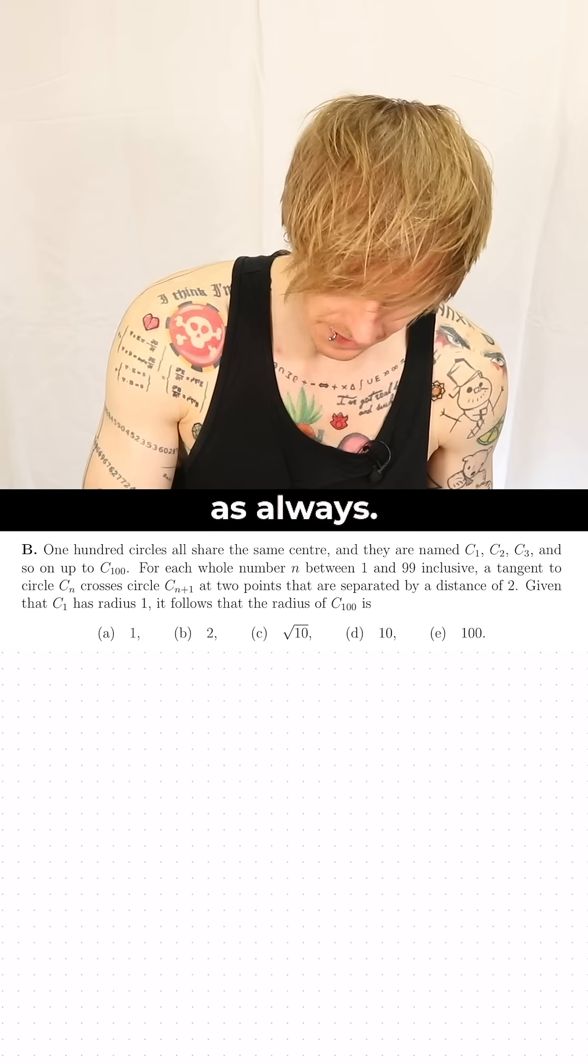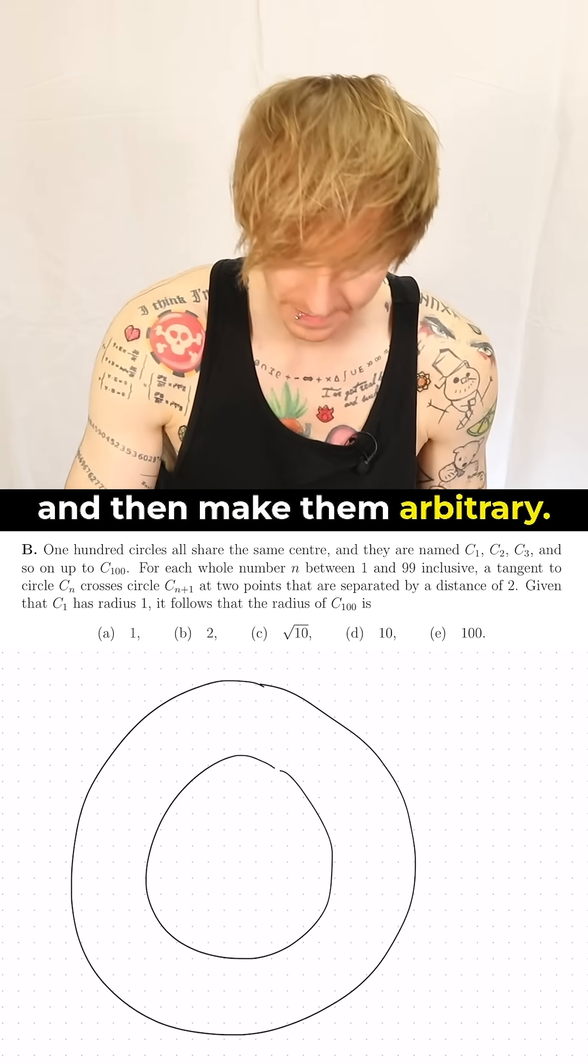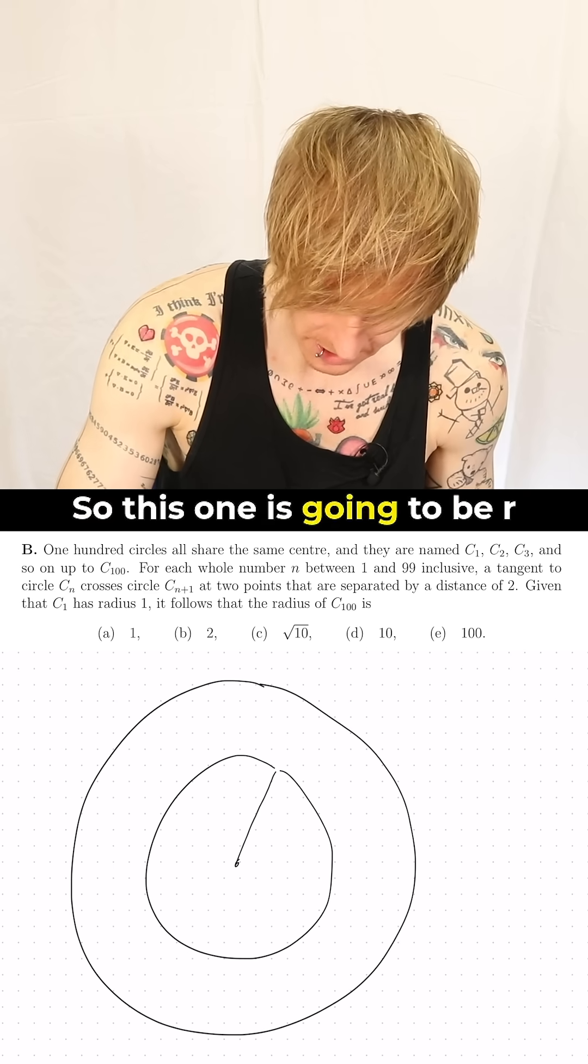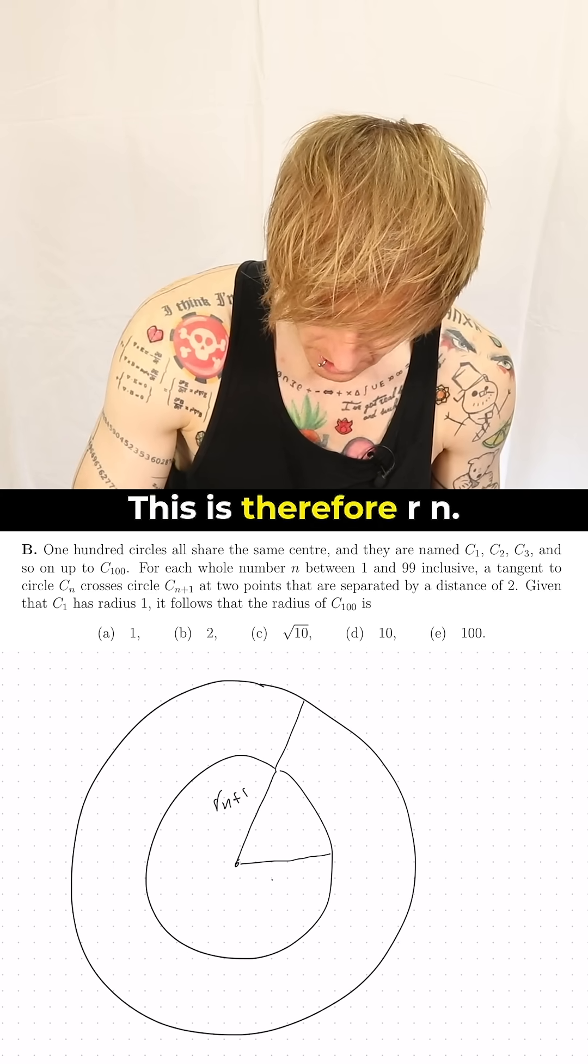We start with a picture as always. Let's draw two of these circles and make them arbitrary. So this one is going to be R(n+1), the outer one. This is therefore Rn.